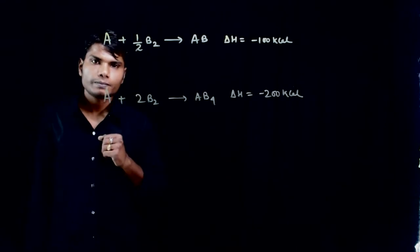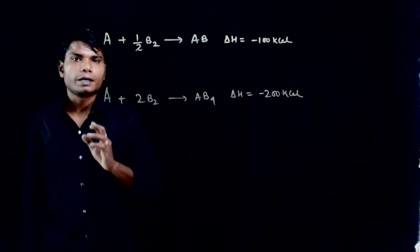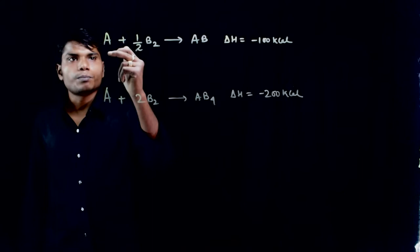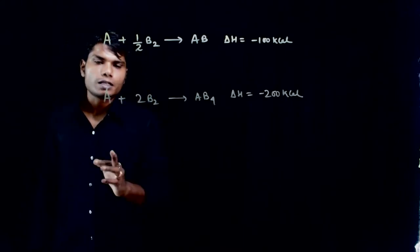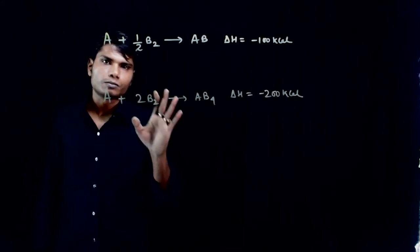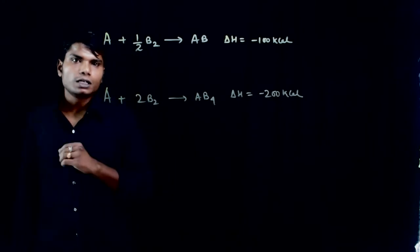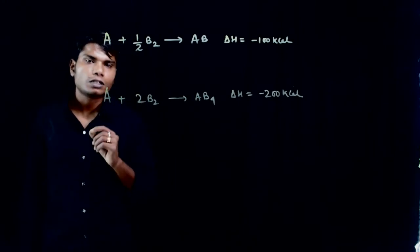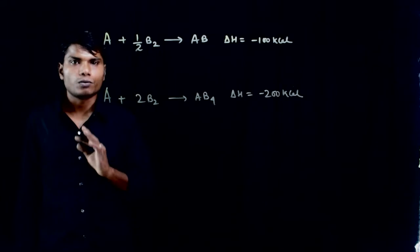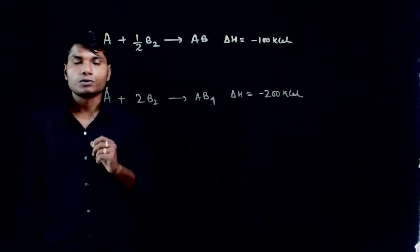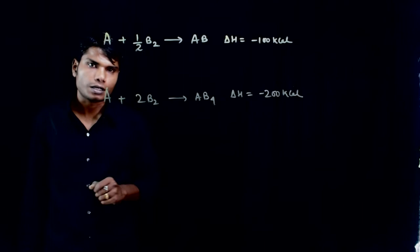The question is, one mole of A is released - some part is reacting via this process and some part of A is reacting via this process. Total delta H, 140 kilocalorie liberated. The question asks how much reacts via this path, how much via this path.